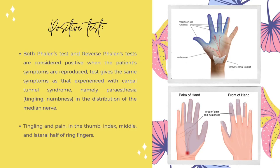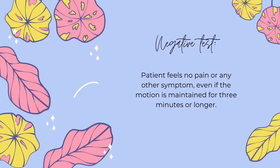So how do we know whether the test is positive or negative? Let me go through this in more detail. Both the Valen and reverse Valen tests are positive when the patient's symptoms are reproduced — that is, when the test produces the same symptoms as carpal tunnel syndrome, specifically paraesthesia, which is tingling or numbness in the median nerve distribution, as well as tingling and pain in the thumb, index, middle and lateral half of ring fingers. If the test is negative, the patient feels no pain or any other symptoms, even if the motion is maintained for 3 minutes or longer.